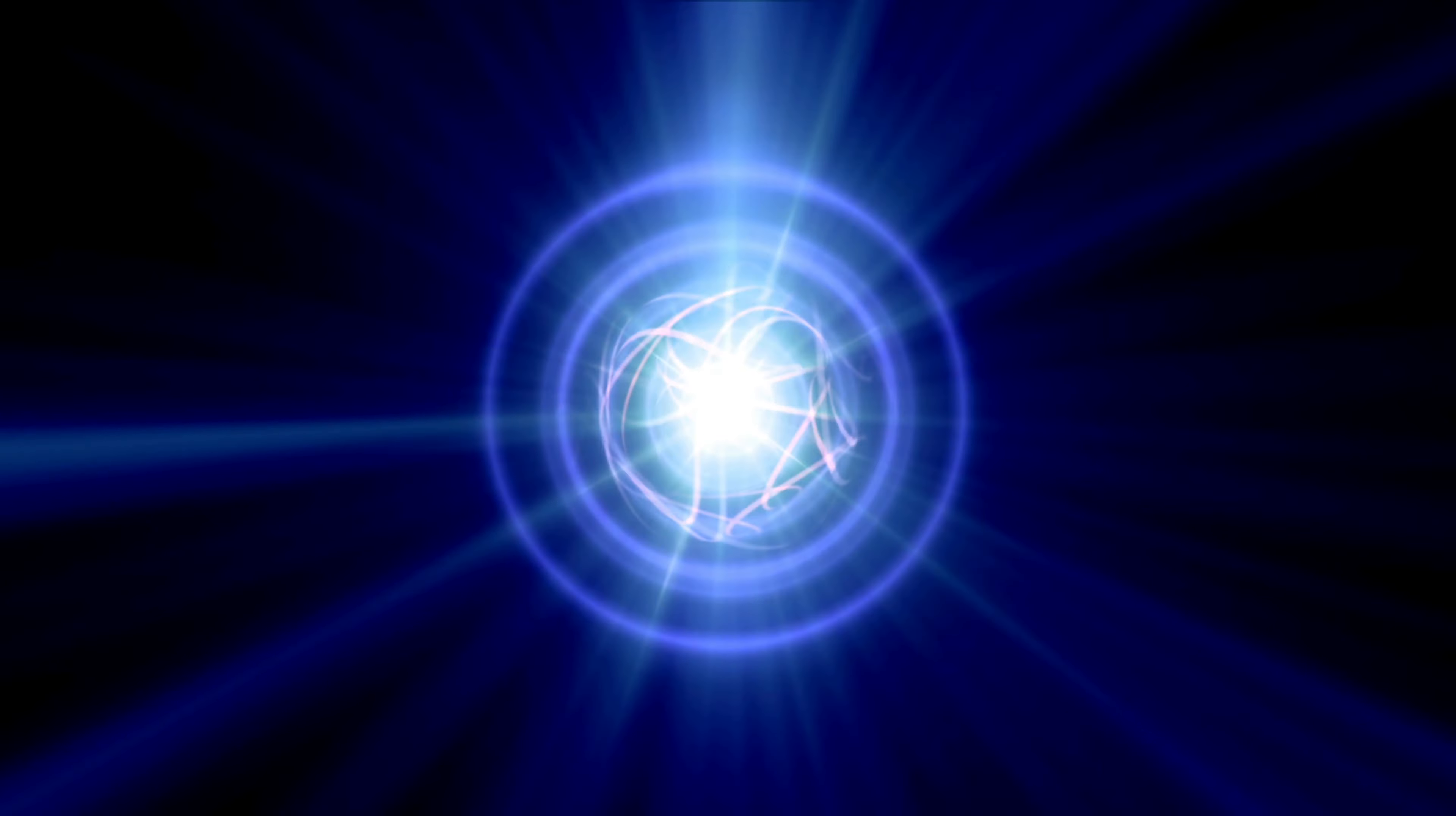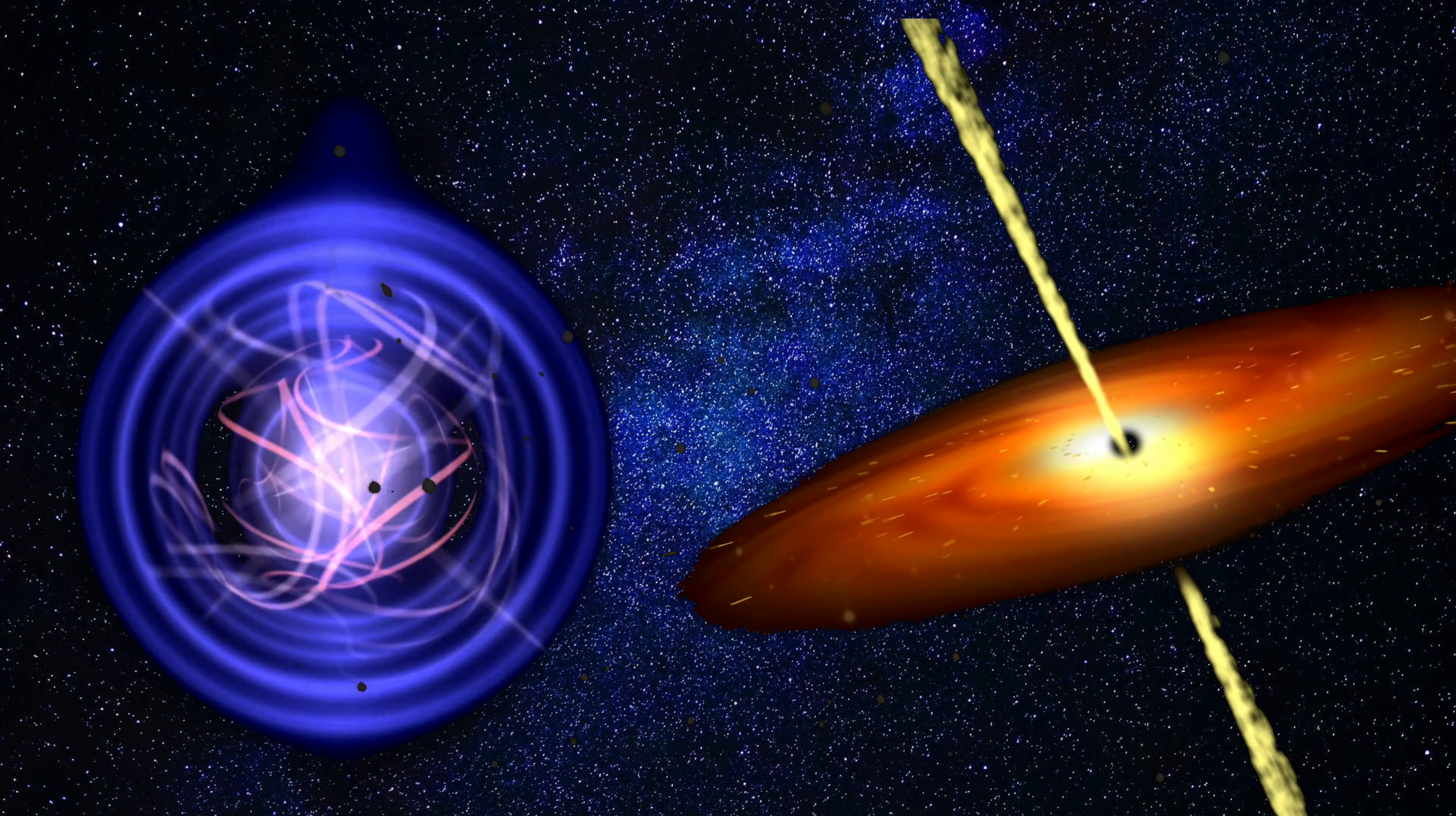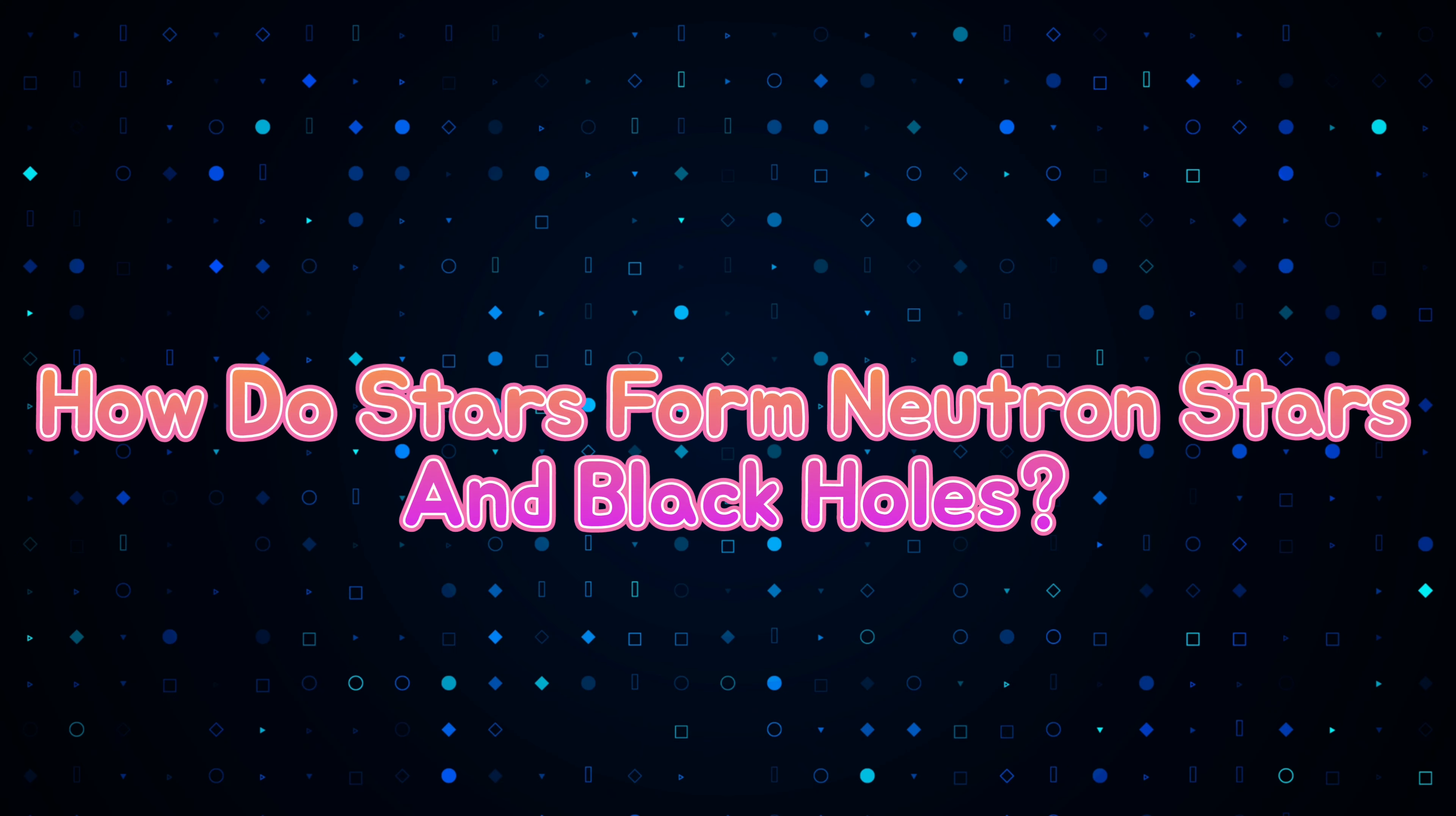So, how is this possible? How can a single star change to two most terrific objects of the universe? Let's answer this in today's video titled, How do stars form neutron stars and black holes?